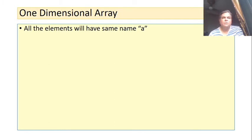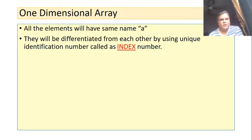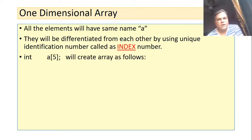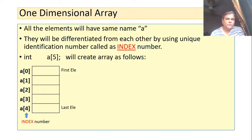Since all elements have the same name A, that creates a problem: how do we access them individually? The compiler provides a solution. Each element can be differentiated from others using a unique identification number called an index number. Index numbers are not decided by the programmer — whenever we declare an array, the compiler decides the index numbers. You can see in the picture that the array will consist of 5 elements, all having the same name A.